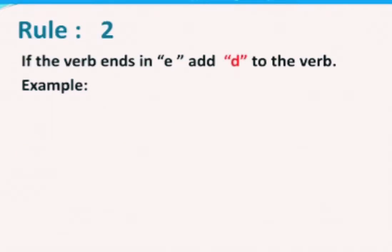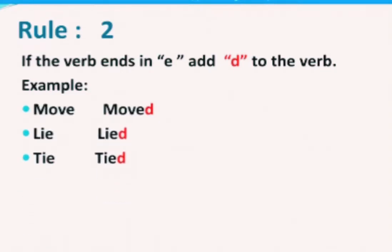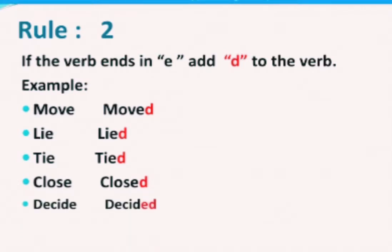The second rule is: if the verb ends in 'e', we will simply add 'd' to the verb. For example, 'move' becomes 'moved', 'tie' becomes 'tied', 'lie' becomes 'lied', 'close' becomes 'closed', 'decide' becomes 'decided'. See that the verbs like move, lie, tie, close, and decide end in 'e', so we just add 'd'.